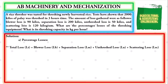To solve for total loss, with symbol LT, we simply add: blower loss plus separation loss plus unthreshed loss plus scattering loss. Substituting values: 90 kg + 200 kg + 50 kg + 120 kg. We simply add and we have a value for our total loss of 460 kilograms.